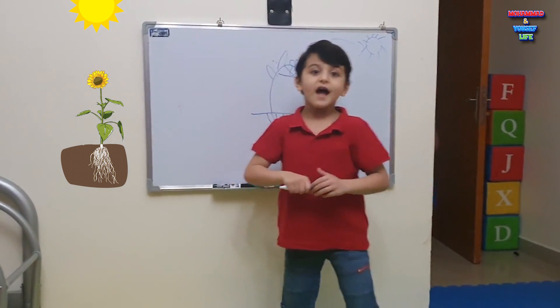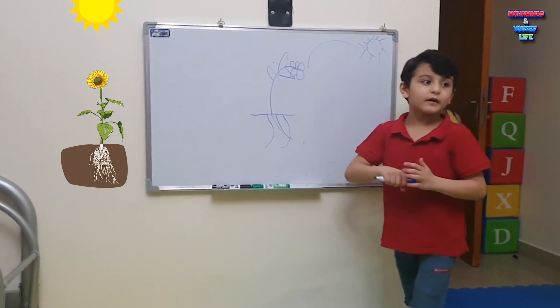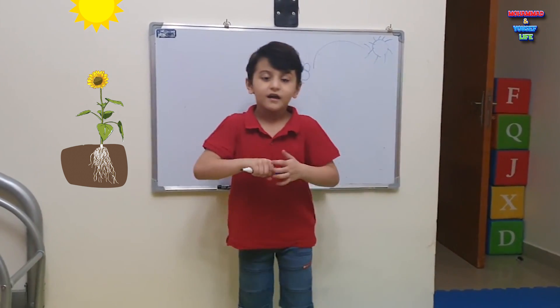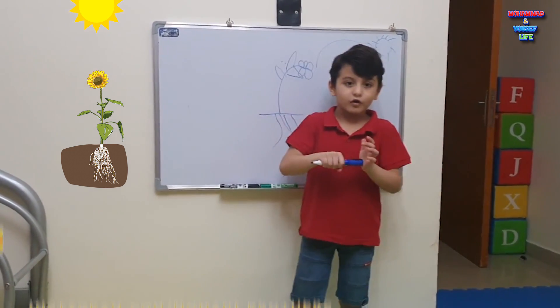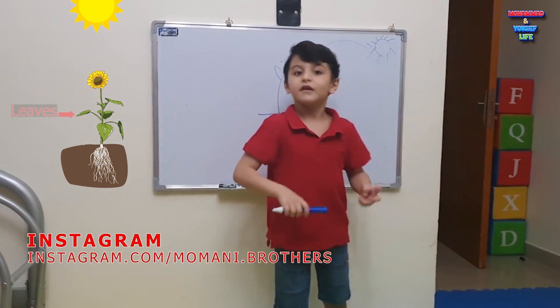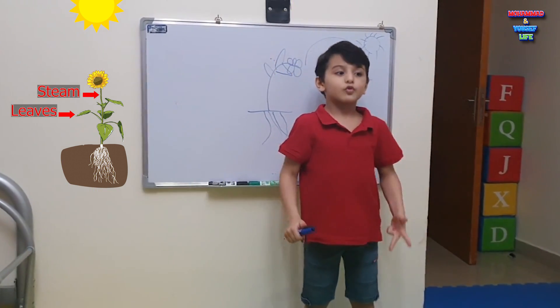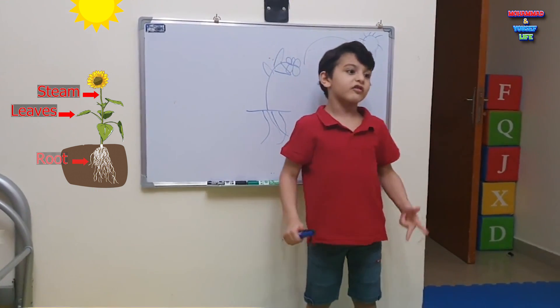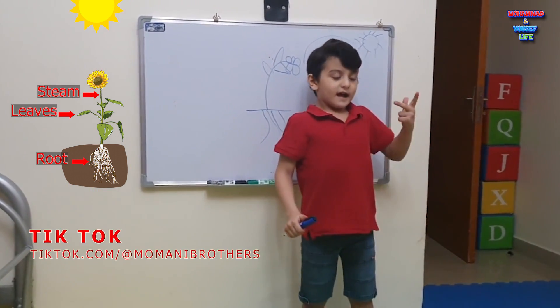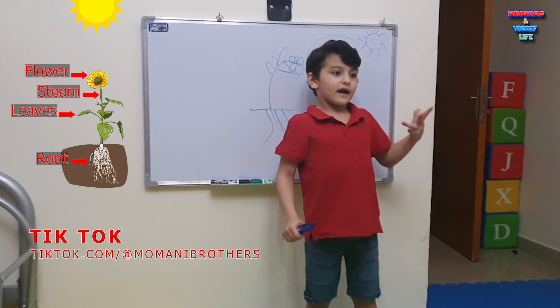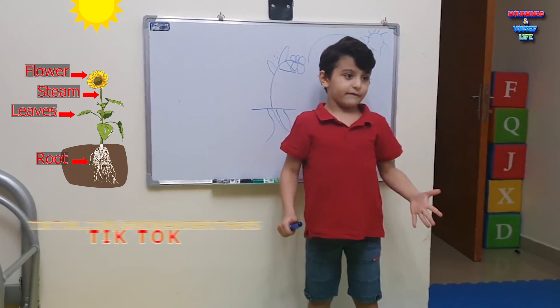And now I'm going to tell you the parts of the plant: leaf, stem, roots, and flower, and leaf.